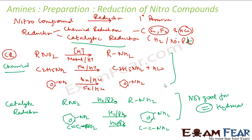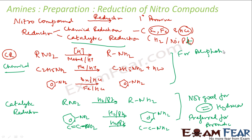In that case, the chemical method — using a metal and acid — is preferred. This chemical method is preferred for aromatic compounds, while catalytic is for aliphatic. Also, if you have a double bond, the catalytic method has issues, so chemical is better. In the case of Fe and HCl, FeCl2 gets hydrolyzed back to HCl, so only a small amount of HCl is required to start the reaction and you can easily recover the metal.